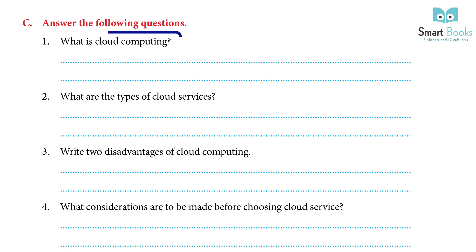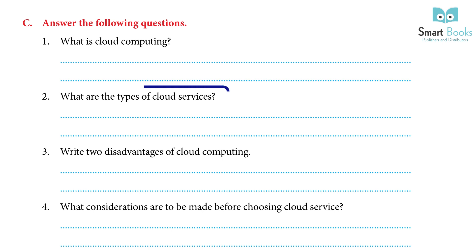C. Answer the following questions: 1. What is cloud computing? Cloud computing is a service that requires a subscription and includes a number of services. These services are used by individuals and organizations, because all of the processes take place in the internet world — it is known as cloud computing. 2. What are the types of cloud services? Different types of cloud services are available depending on the needs of the users: 1. Public cloud, 2. Private cloud, 3. Community cloud, 4. Hybrid cloud.